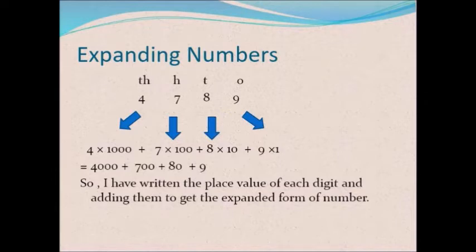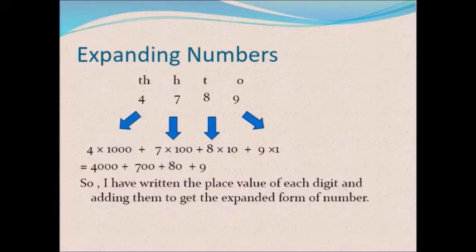Seven is at the hundreds position, eight is at the tens position, and nine is at the ones position. In expanding a number, we write the place value of each digit and then add them. Four is at the thousands position, so I multiply it by 1000. Seven is at the hundreds position, so I multiply it by 100. Eight is at the tens position, so I multiply it by 10. Nine is at the ones position, so I multiply it by 1. Adding them all: 4000 + 700 + 80 + 9. This is the expanded form.